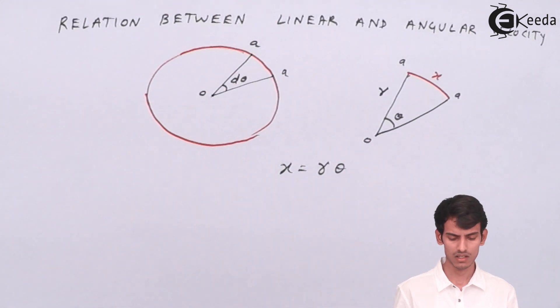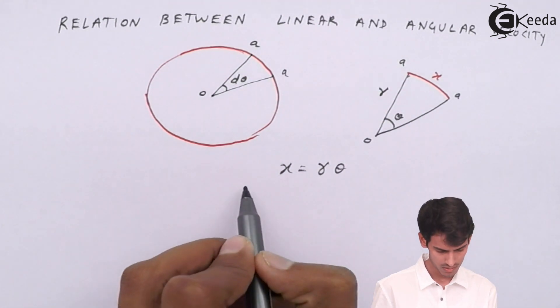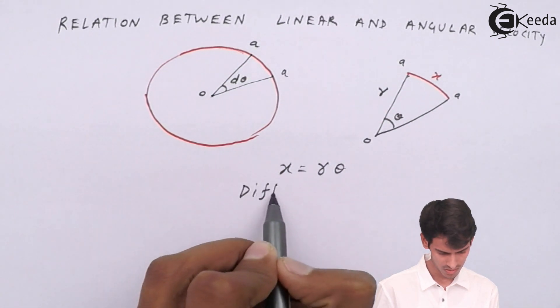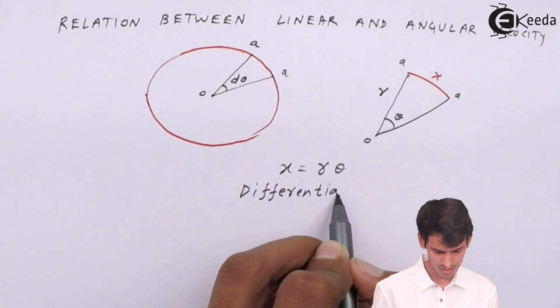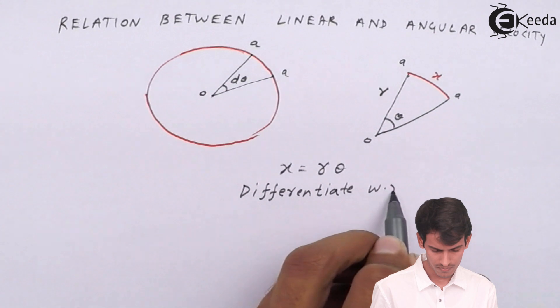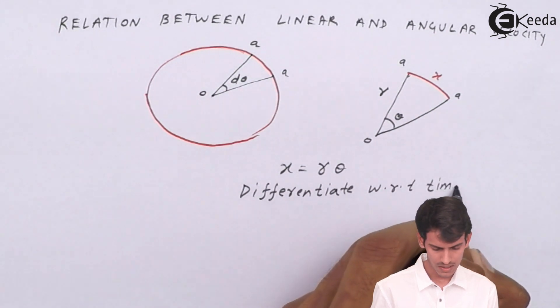This is we get from geometry. This is very basic thing that you study in lower standard, 8th standard, 9th standard. You have already seen this. Now what we have to do is we have to differentiate this equation with respect to time. x is equal to r times theta.